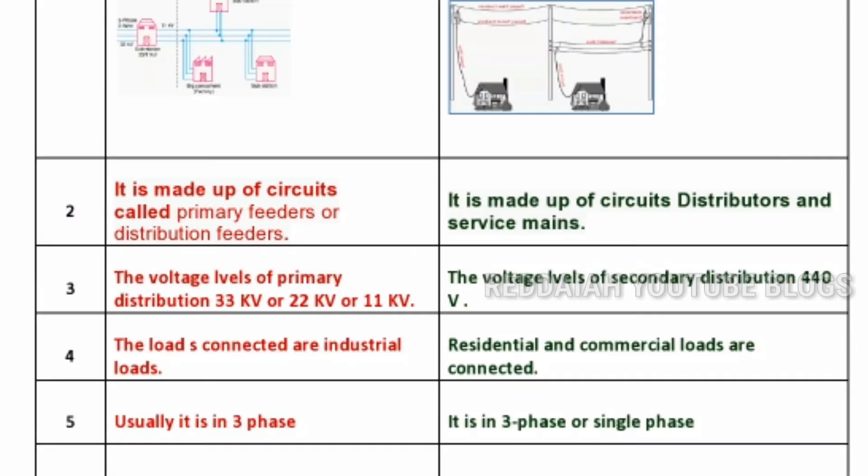The primary distribution system is made up of primary feeders — that is, primary feeders or distribution feeders come under the primary distribution system. The secondary distribution system is made up of distributors and service mains. It is usually 3-phase, but at consumer terminals it is single phase.